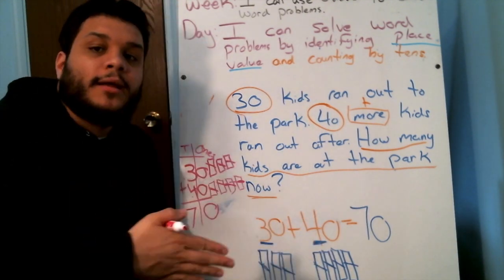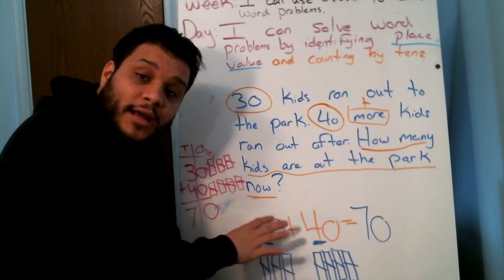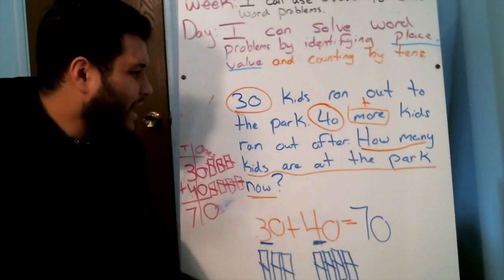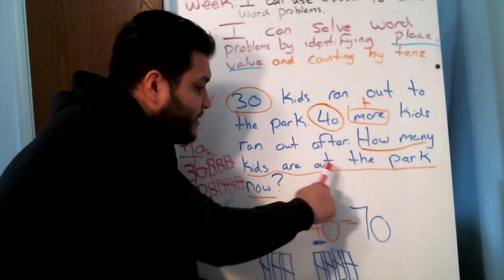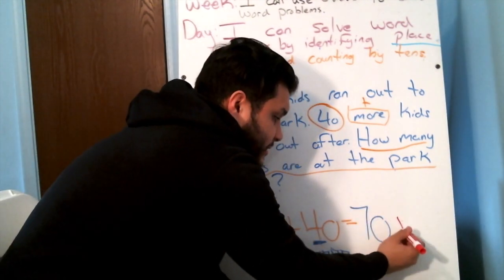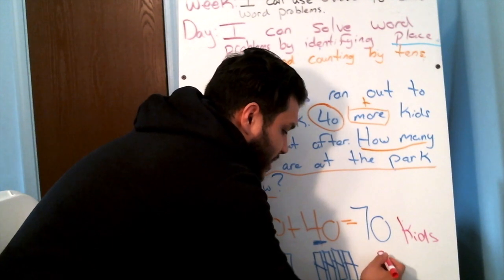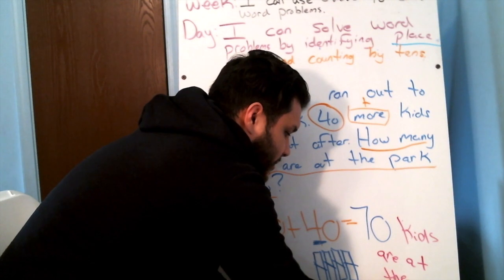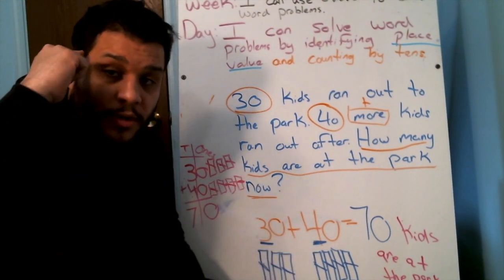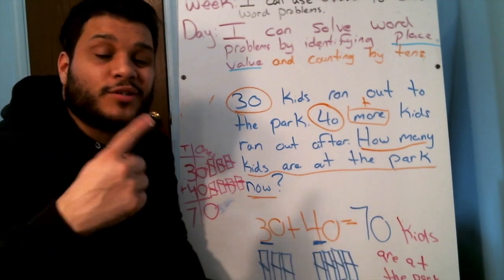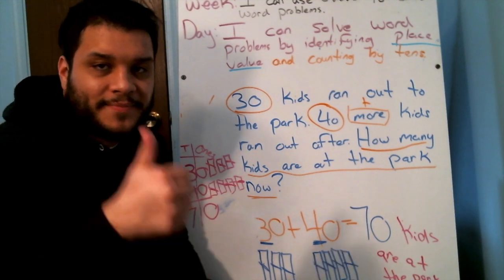When we have ones involved, that's when we do it vertically because it's easier to see and count. But if you ever have to solve it horizontally, you know how to do it. Am I done? I have my answer, but did I label it? No. So I would label this: seventy kids are at the park. Awesome job! You guys did a great job this week. Next week we're going to continue practicing our place value. If you need to rewind and look at this video again, please feel free. Enjoy your weekend — bye!